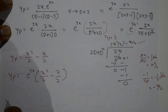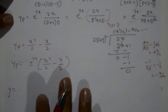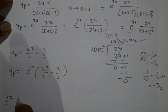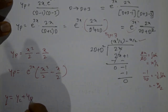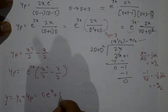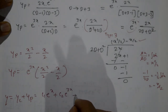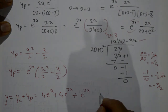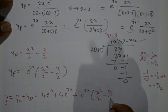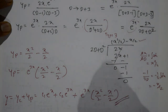The general (complete) solution is y = yc + yp = c₁e^x + c₂e^(3x) + e^(3x)(x²/2 - x/2). This is the required complete solution.